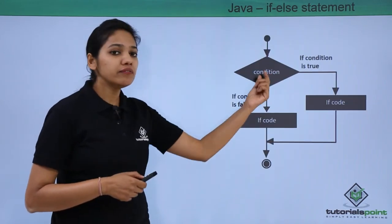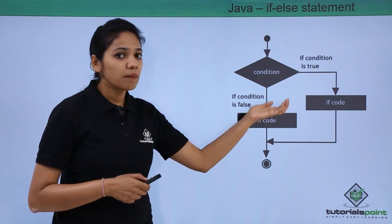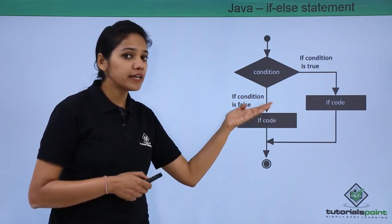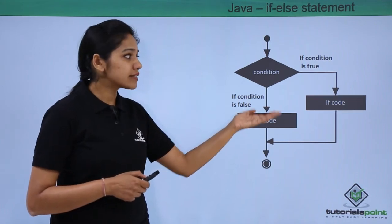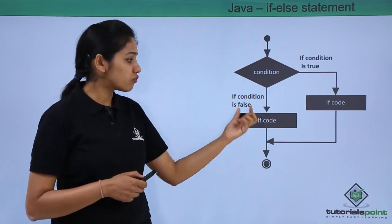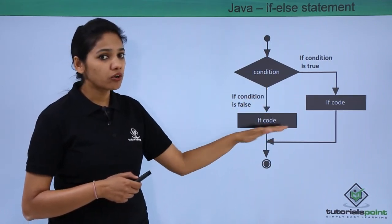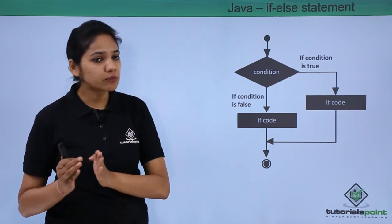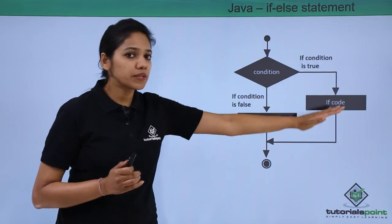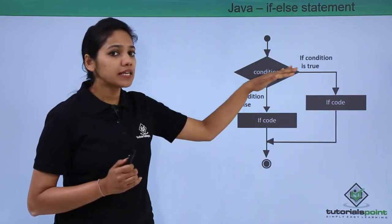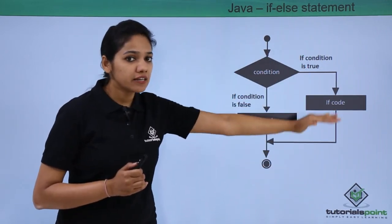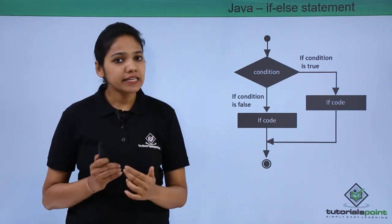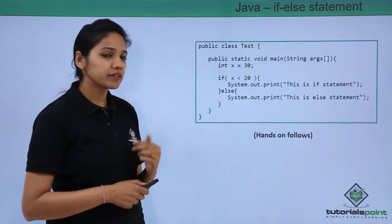If the condition is met and true, it executes the block of statements — this is how if works. Now, if the condition is false, there is another block of code to be executed. So the difference between if and if-else is: if the condition is true, execute and terminate. But in case of if-else, there is both an if statement and also an else statement.